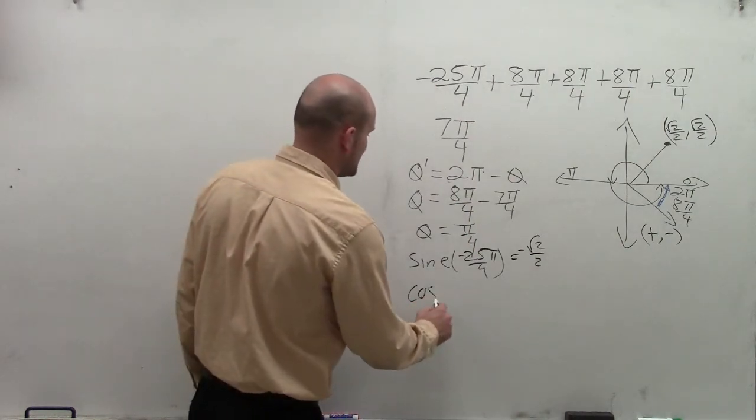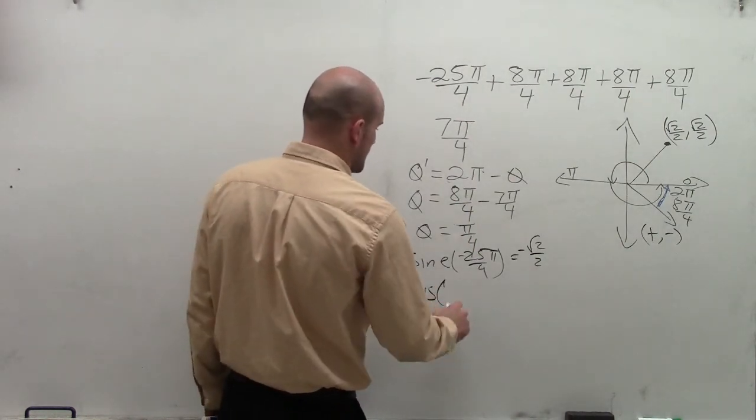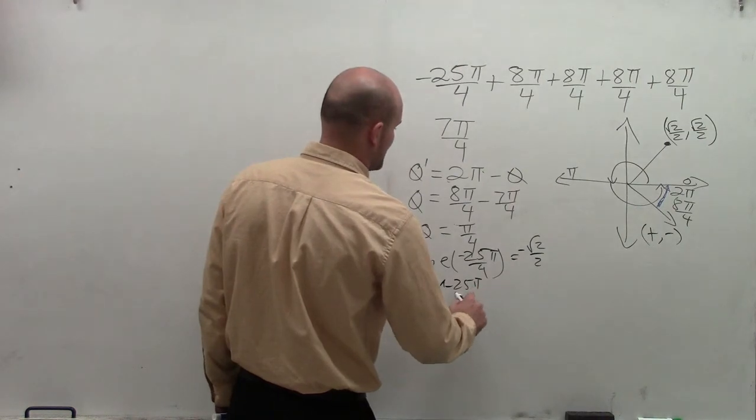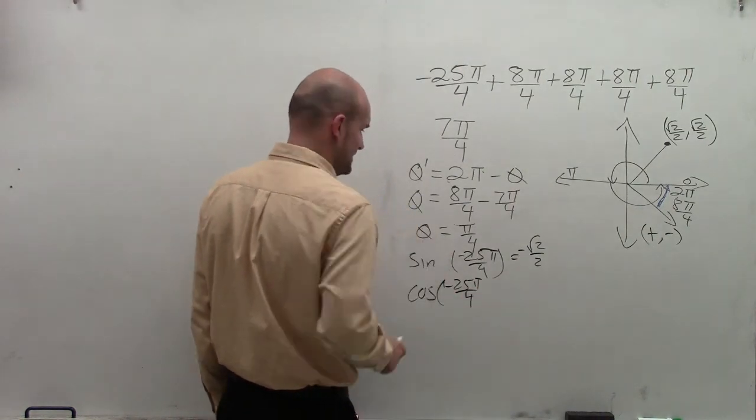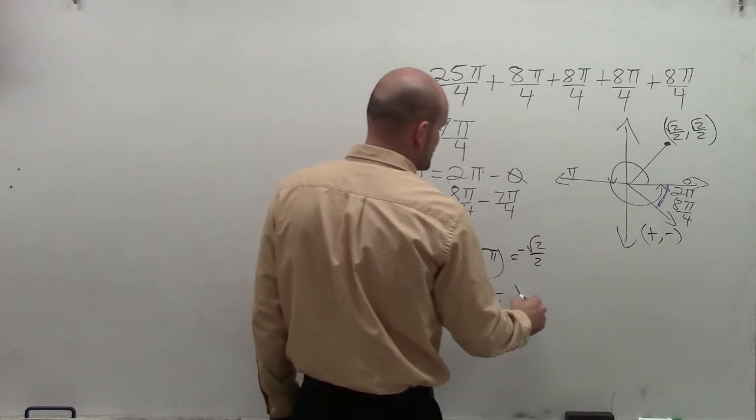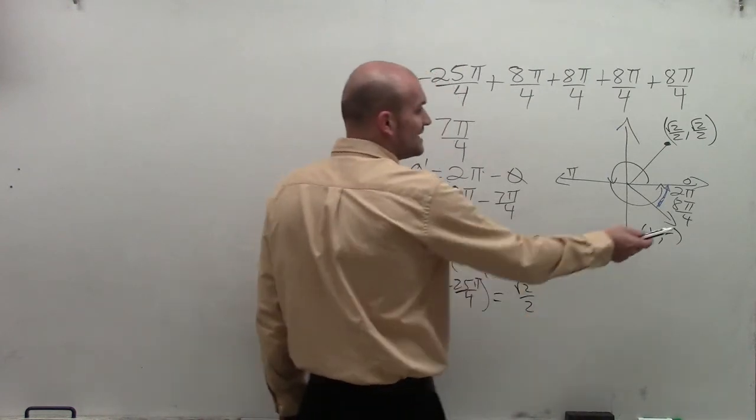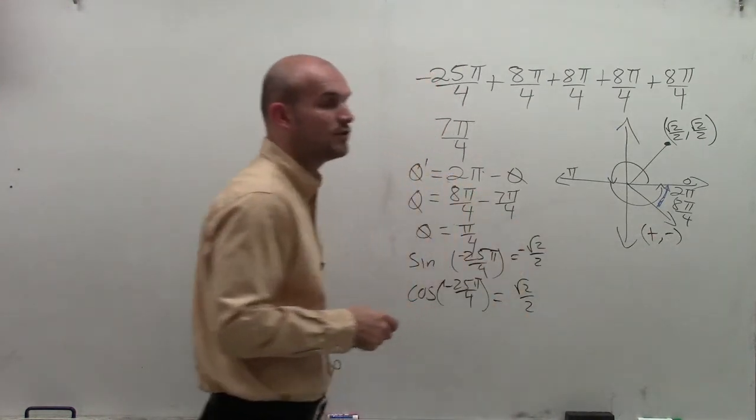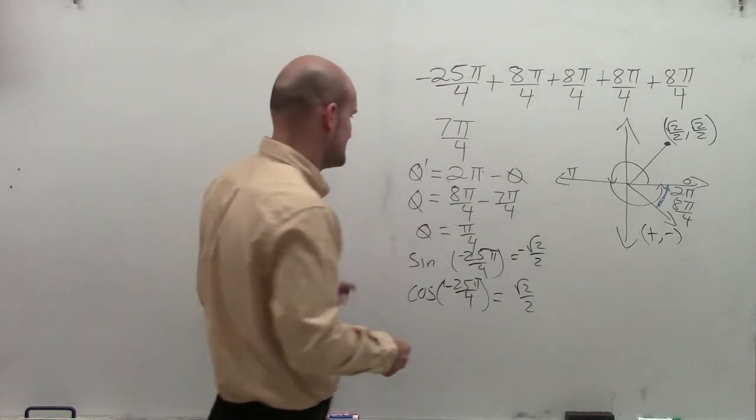Then I look at the cosine of negative 25 pi over 4, and that's going to equal the x value, which is square root of 2 over 2. And again, since it's in the fourth quadrant, my x value is going to be positive.